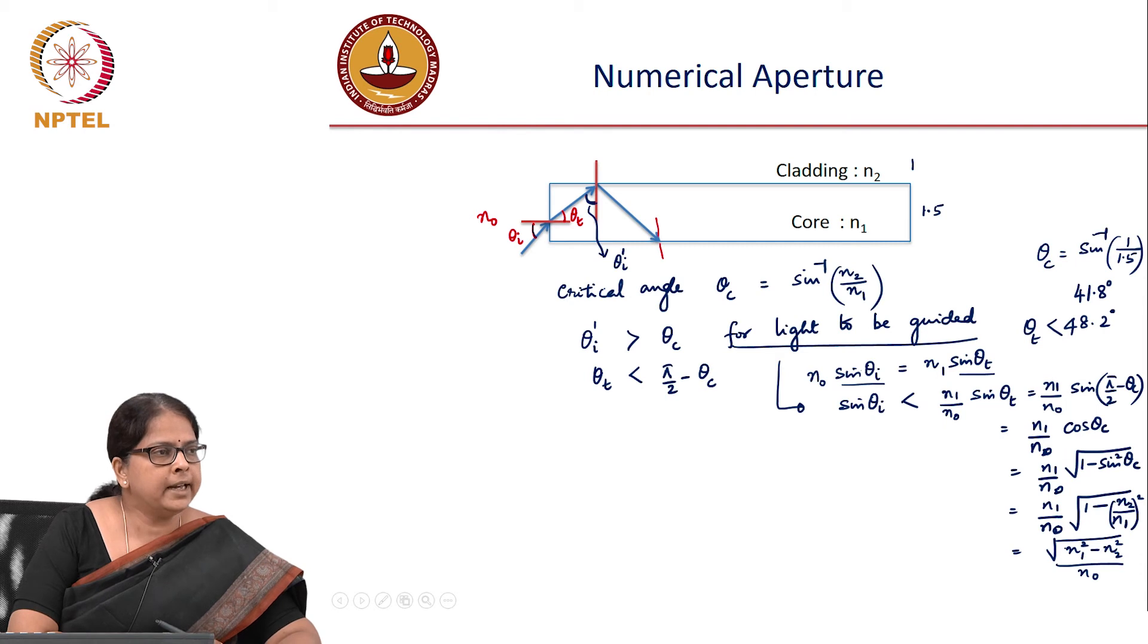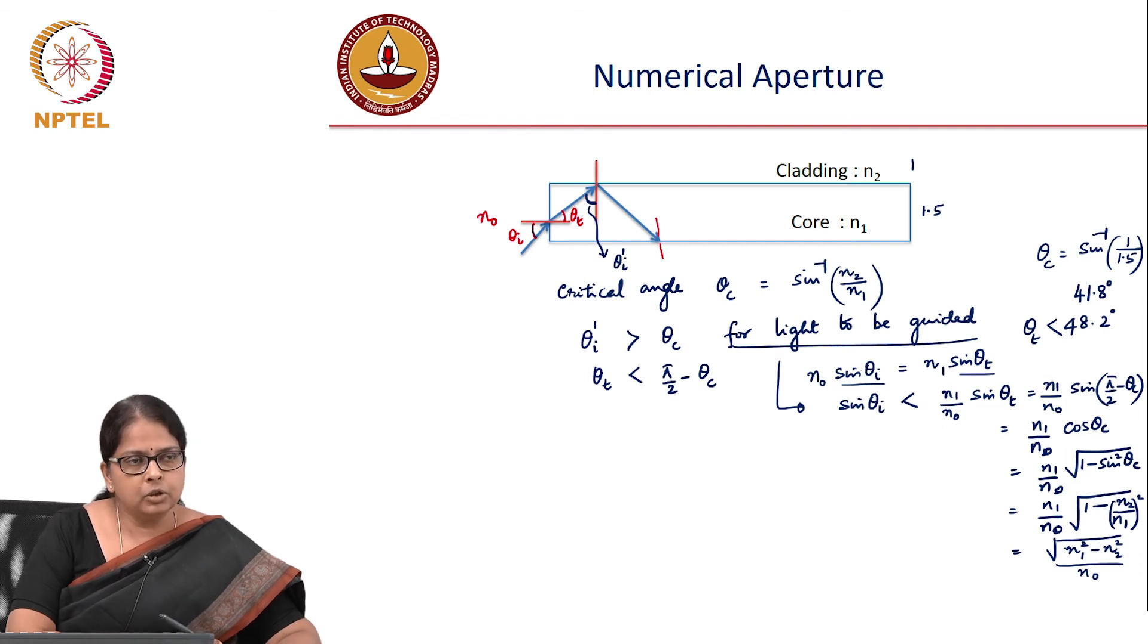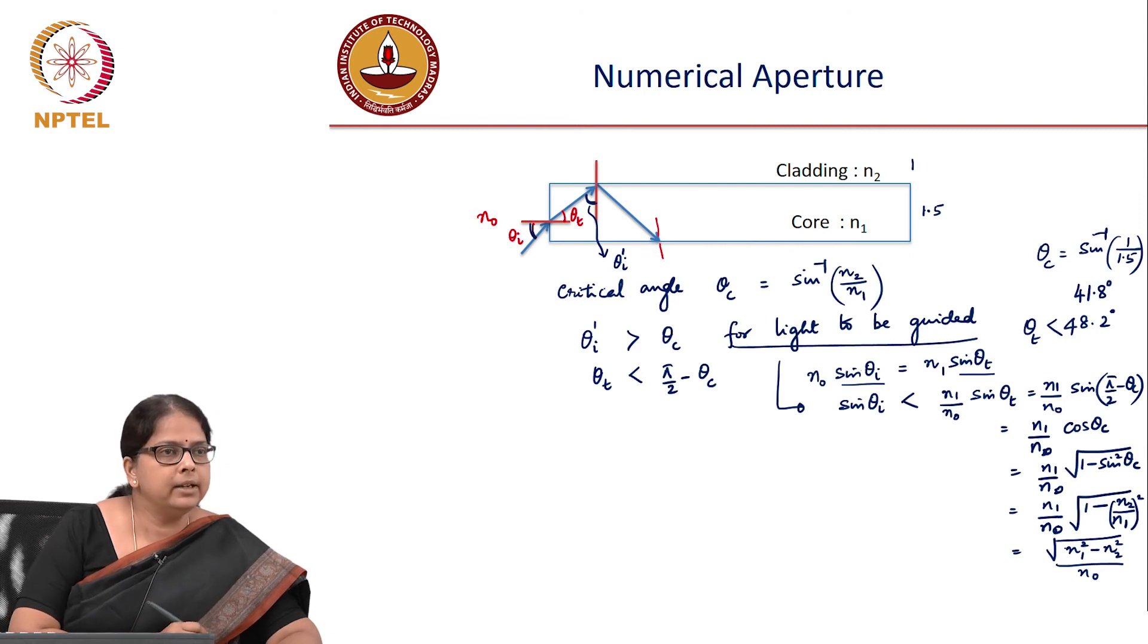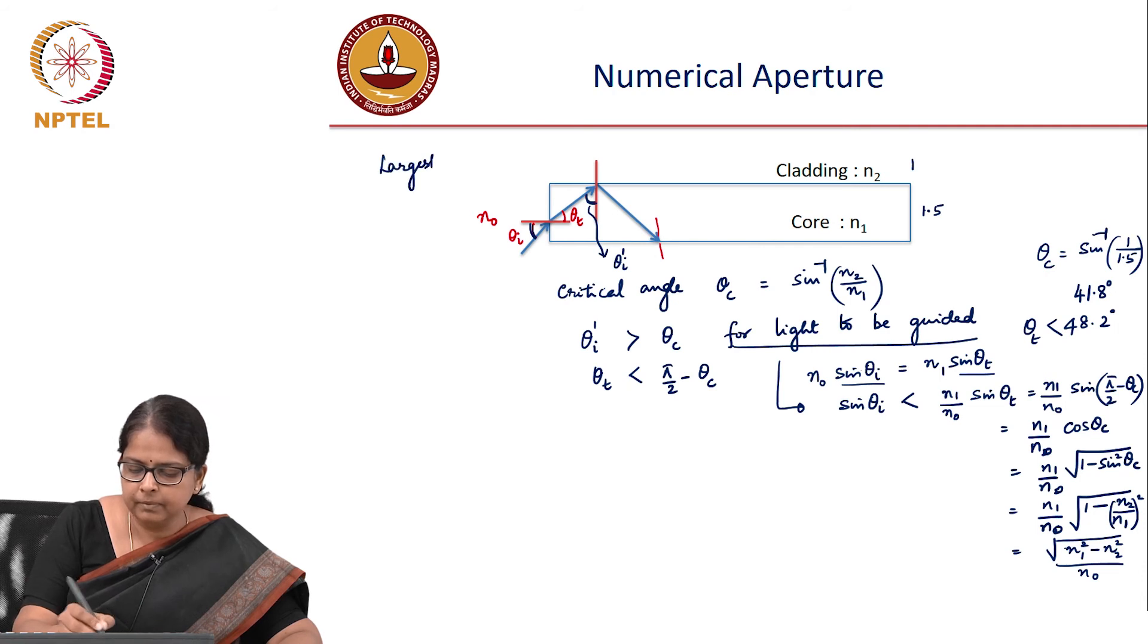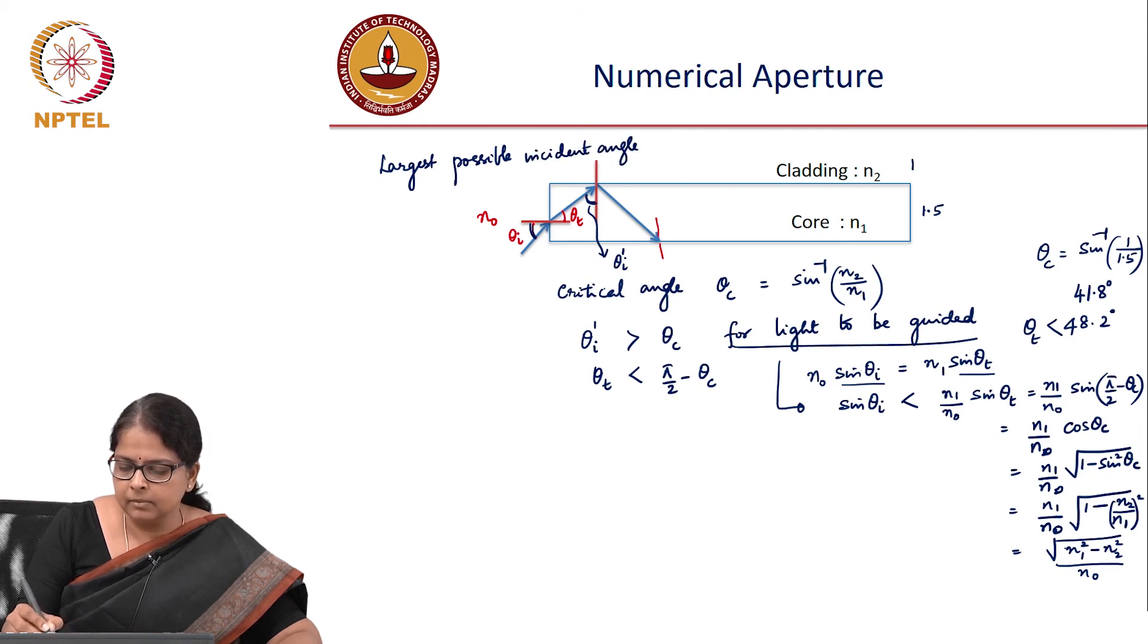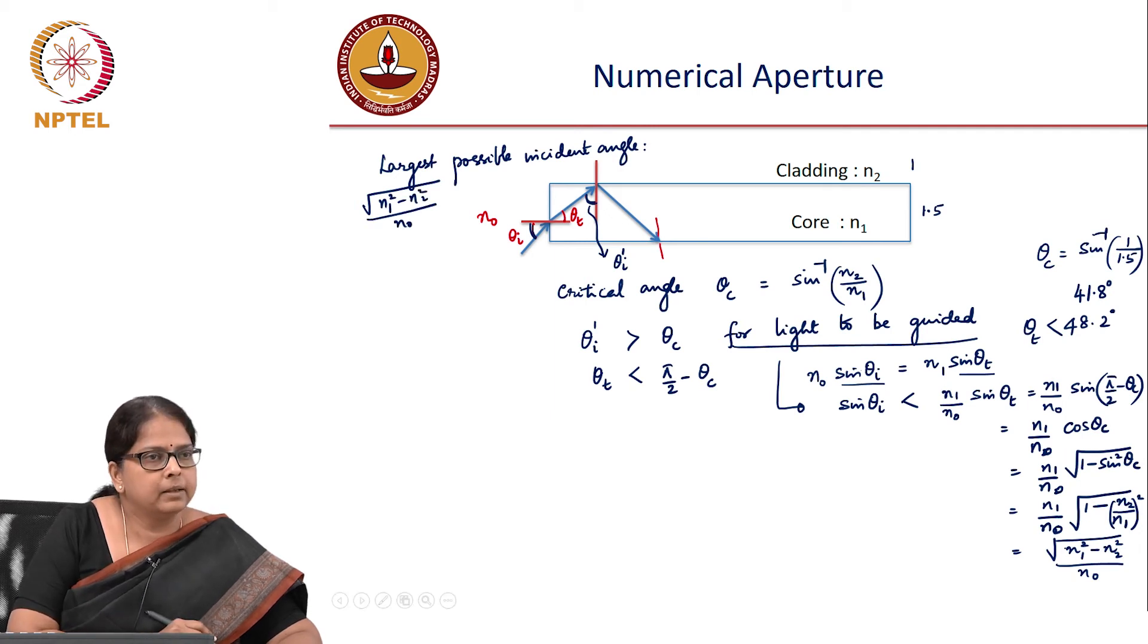This gives you the largest angle you can launch. The largest possible incident angle is given by √(n₁² - n₂²)/n₀.